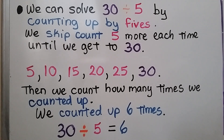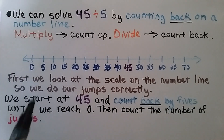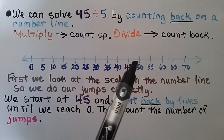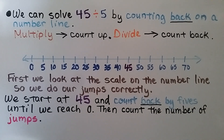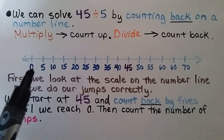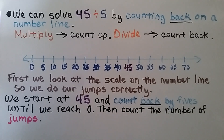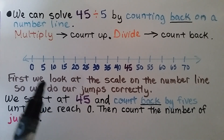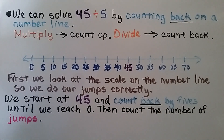We can solve 45 divided by 5 by counting back on a number line. Remember: when we're multiplying we count up, and when we're dividing on a number line we count back. First we look at the scale on the number line so we do our jumps correctly. The scale is going by increments of 5, which is perfect to divide by 5. We start at 45, the dividend, and count back by fives until we reach 0.